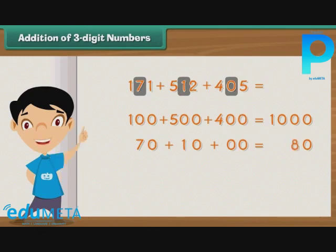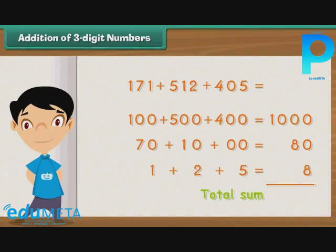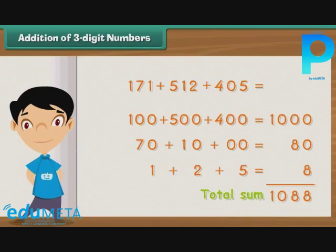Finally, we add the digits at the ones place, that is, 1, 2 and 5, to get 8. Now we need to add 1000, 80 and 8 to get the sum of 171, 512 and 405. The result of the addition is 1088.